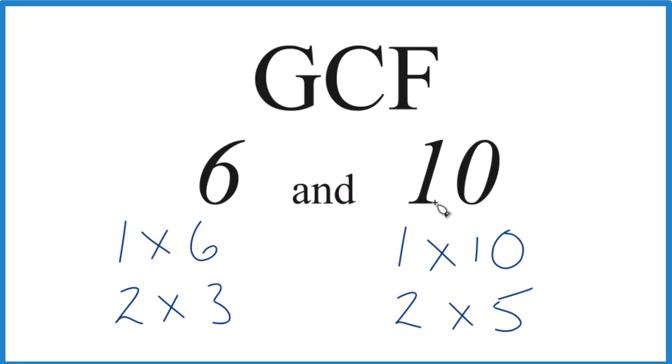So these are the factors for 6, and for 10, we're going to find the greatest common factor between 6 and 10. So 1, that's a common factor, and then 2, that's also a common factor, and that's it. So 2, that's the greatest factor that these two numbers have in common.